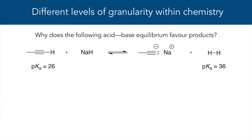Here's an example. How would you explain why the following acid-base equilibrium favors the products? At one level of granularity you could talk about pKa values, and how they can be used to determine the direction of the equilibrium.